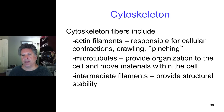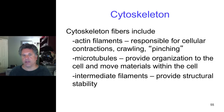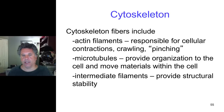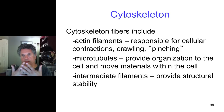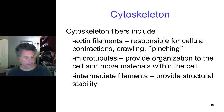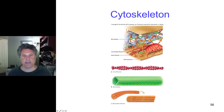We've mentioned the intermediate filament lamin (L-A-M-I-N) that underlies the nuclear envelope and is responsible for breaking down the nuclear envelope during mitosis. That lamin protein is an intermediate filament protein, and a scanning electron micrograph shows the meshwork of the intermediate filament lamin that is under the nuclear envelope.